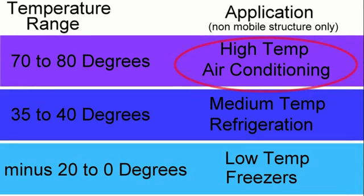That is what the focus of this video is going to be on. I am not going to get into medium-temp and low-temp or any mobile-type applications such as automotive. All those are different applications with different design characteristics. Our main focus is on high-temp air conditioning, typically 25 tons and below. It can relate to commercial, it can relate to residential — just a standard-type structure like a home or a business.